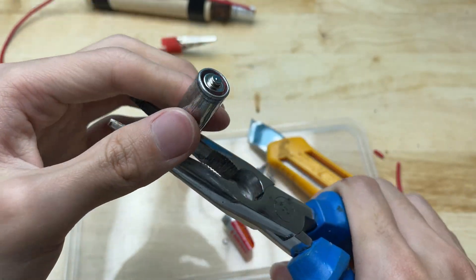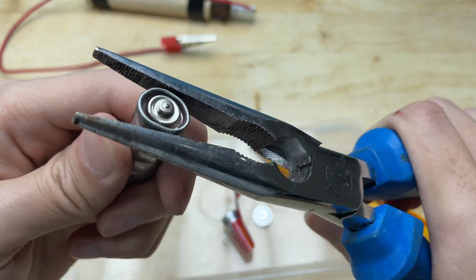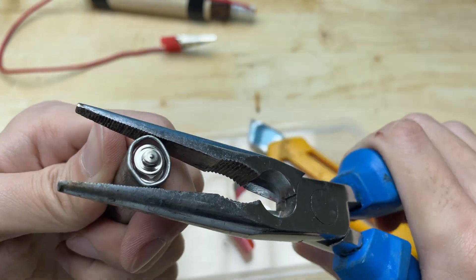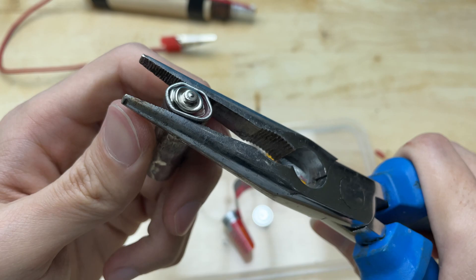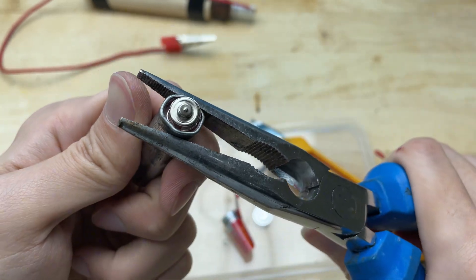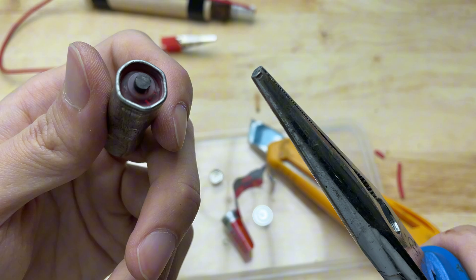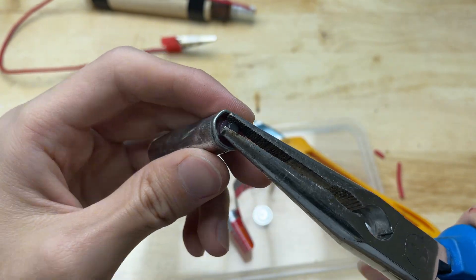Inside, there's a graphite rod. Use pliers to grip the end and pull it out.